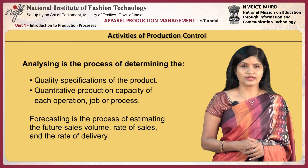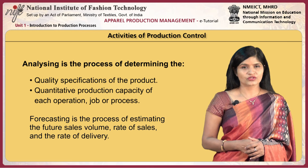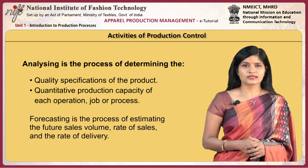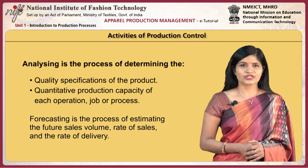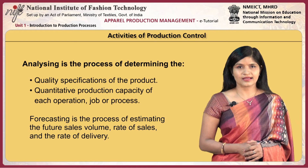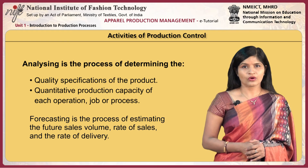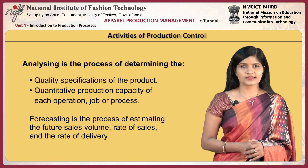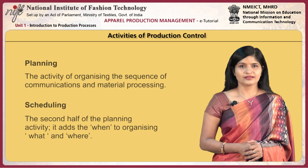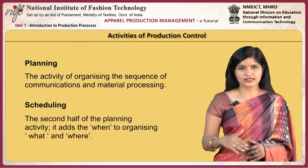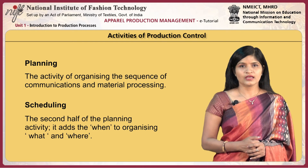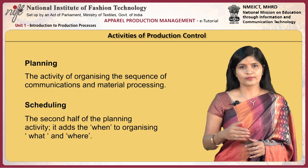Analyzing is the process of determining quality specifications of the product. It provides specifications for elements of production like raw material, equipment, tools, and personnel that will yield the durability, utility, and emotional appeal required for the garment. Quantitative production capacity of each operation, job, or process is analyzed to determine the anticipated load on production per unit time. Forecasting is a process of estimating future sales volume, rate of sales, and rate of delivery. Planning is organizing the sequence of communication and material processes; scheduling adds 'when' to 'what' and 'where.'